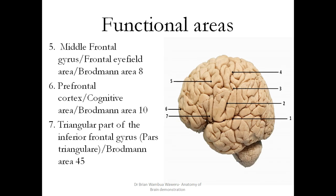Here you have the middle frontal gyrus, and specifically this is the frontal eye field area, or Brodmann area 8. Then you have the prefrontal cortex, which is the cognitive area, or Brodmann area 10.